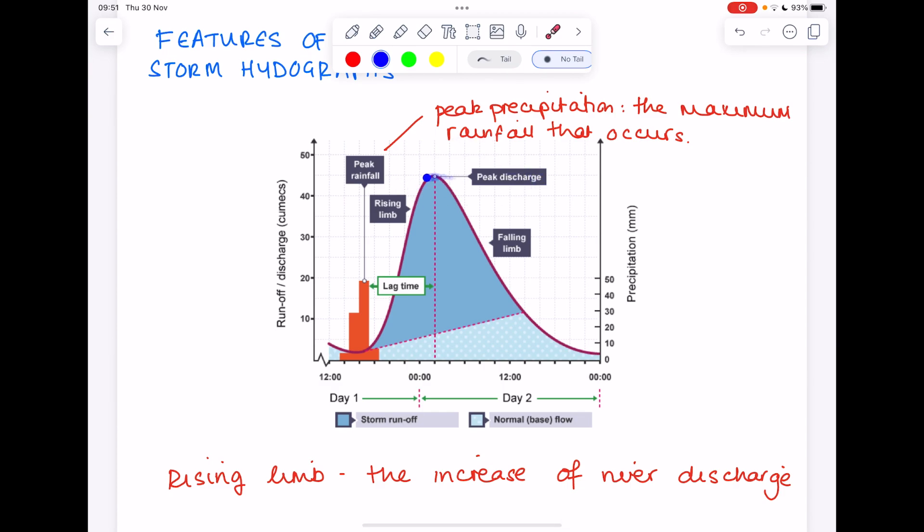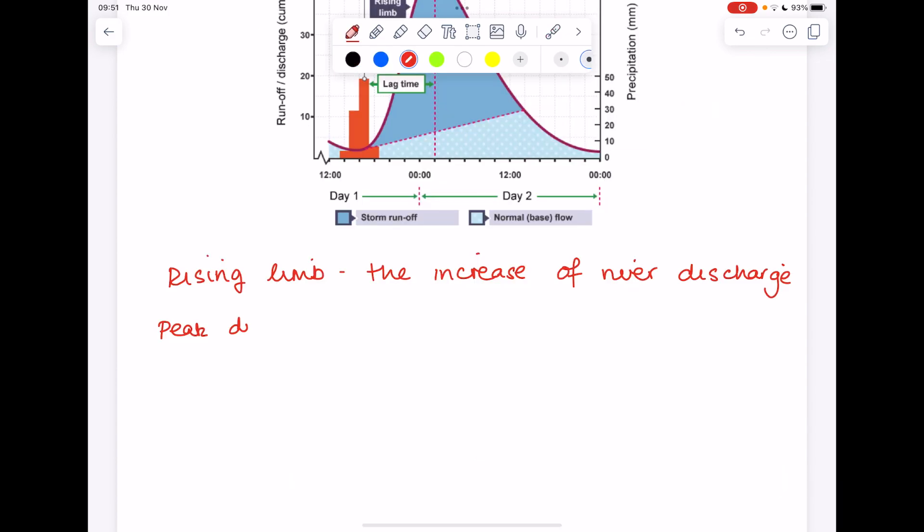Then you have the peak discharge here, which is the maximum discharge. Remember you will see that delay because it does take time for the water to find its way to the river. You may also see this described as peak flow.